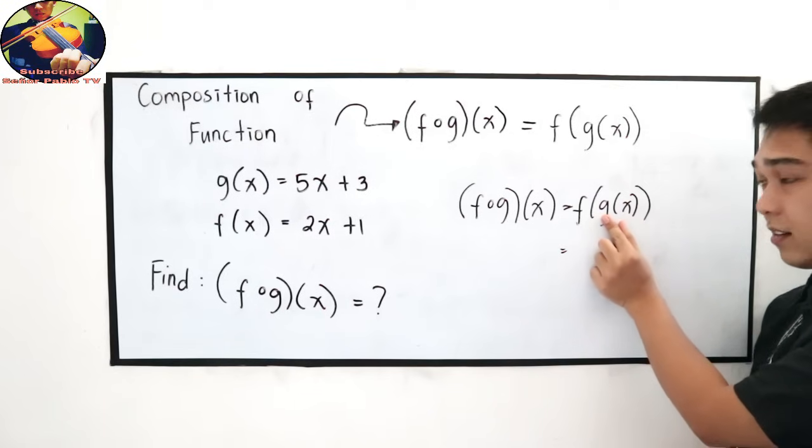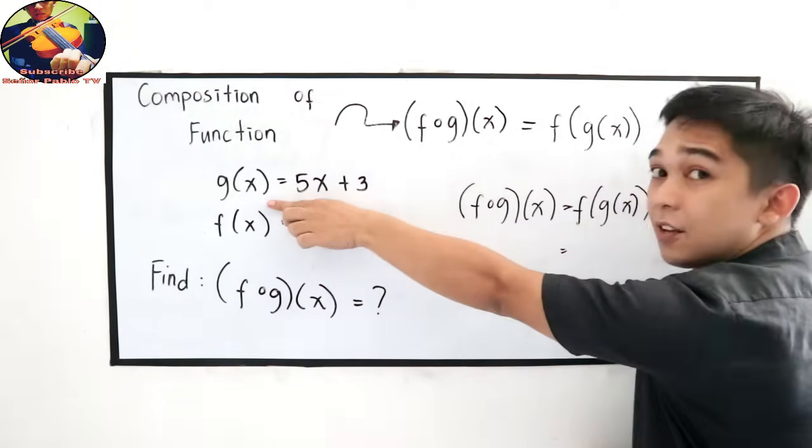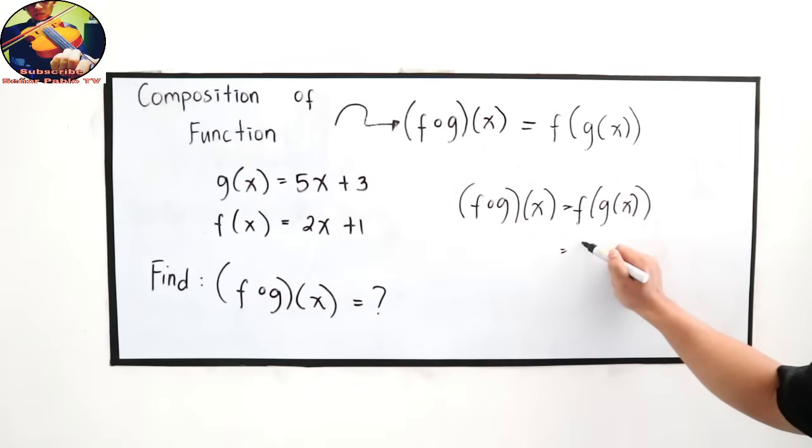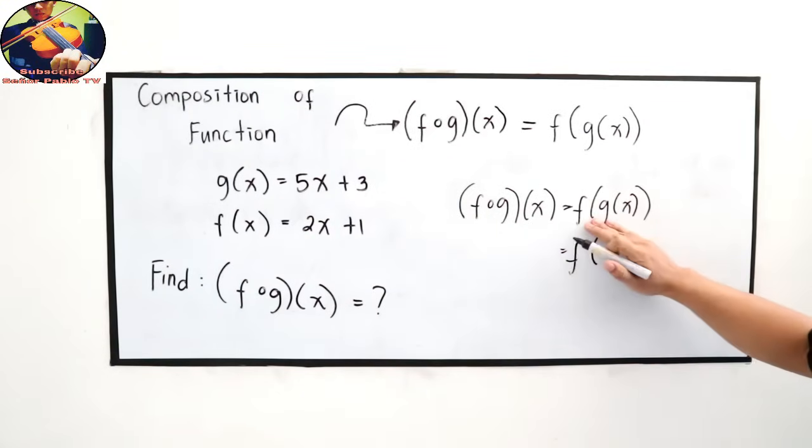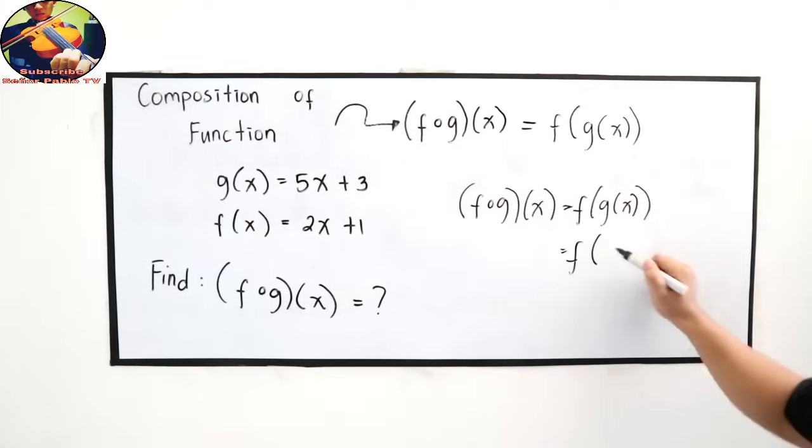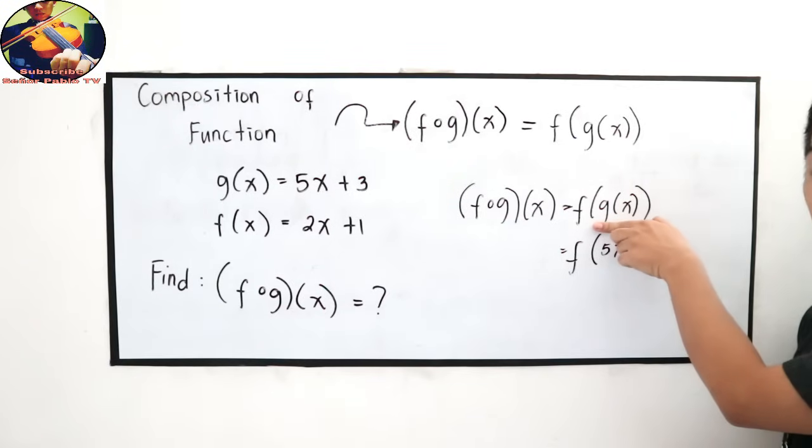So what is the value of g of x? Look at the given. So f of g of x is 5x plus 3. There. We just substitute the value of g of x.